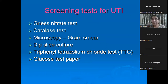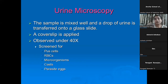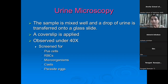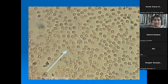When a urine sample comes to the lab, the first thing done is urine microscopy. The sample is well mixed, a drop is taken on a slide with a coverslip, and viewed under the microscope. You can see pus cells, RBCs, organisms if present, casts, crystals, and parasites like Schistosoma and Trichomonas. There are also screening tests — the Griess nitrate test, catalase test, gram smear, dip slide culture, and glucose test paper.